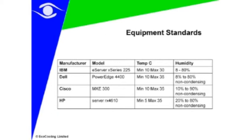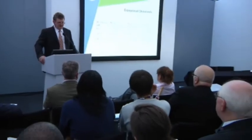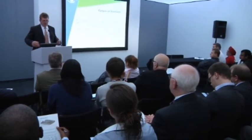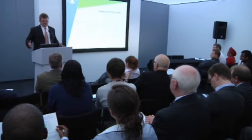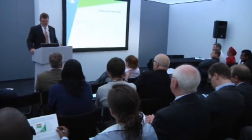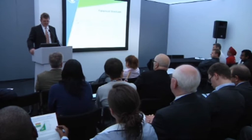You would expect IBM to have some fairly rigorous standards. Take a standard server from them and suddenly you see that the temperature spec is 10 to 30 degrees centigrade, with relative humidities of 8 to 80%. When people look at their equipment, most of them have never been given the environmental operating specifications, and that's a surprise to most people.